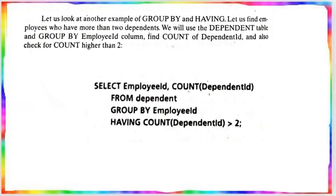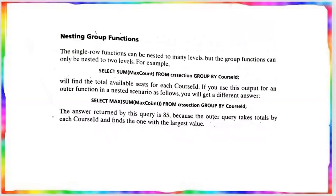To find employees with more than 2 dependents, you will use the Dependents table and GROUP BY the employee ID column. Find the COUNT of dependent ID and check if the count is greater than 2 using the HAVING clause. Also, group functions can be nested, but only up to 2 levels — you cannot nest more than 2 levels as you can with single row functions.